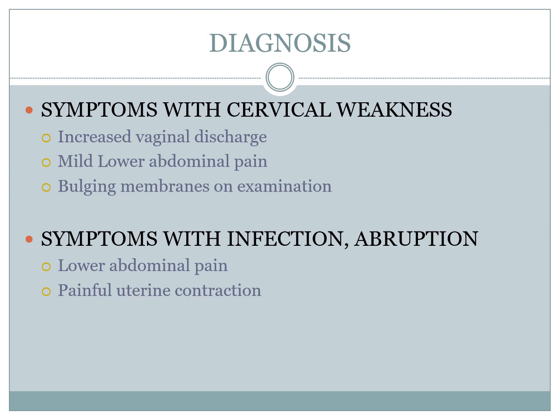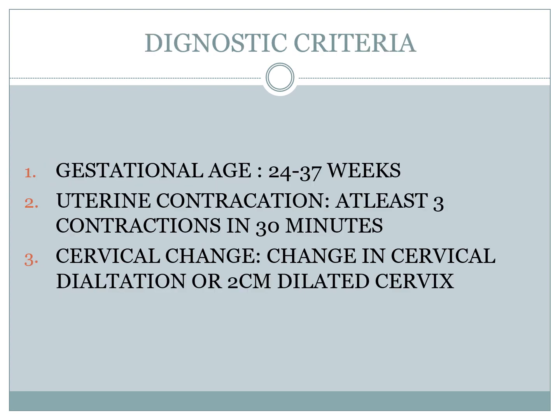For diagnosis, symptoms with cervical weakness include increased vaginal discharge, abdominal pain, or bulging membranes upon examination. There are also symptoms related to infection and abruption, such as lower abdominal pain and painful uterine contractions. Diagnostic criteria include gestational age less than 24 to 37 weeks, with uterine contractions of at least 3 in 30 minutes — that is 1 contraction in 10 minutes — or cervical change with dilatation of at least 2 centimeters.